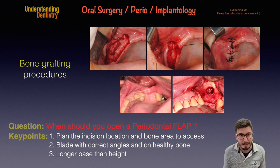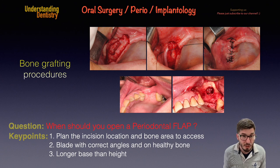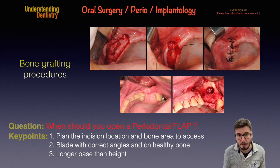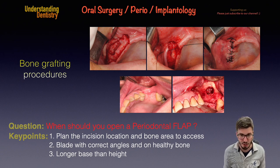In this sinus lift case, the buccal tissue was not keratinized, so we need to be careful about that. The anterior releasing incision is placed on the mesial aspect of the buccal surface of the anterior tooth, and the posterior releasing incision is placed on the distal aspect of the buccal surface of the distal tooth.